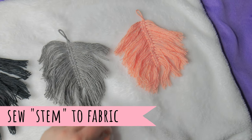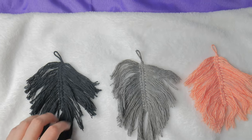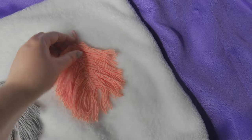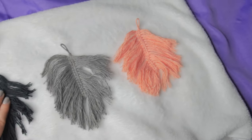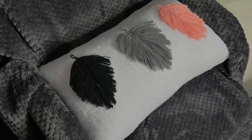So taking some color thread that's the same color as your yarn, you just want to sew in the middle of your stem there and just make sure it's secure. After that, we're going to stuff our pillow, sew it up, and here is the final result.